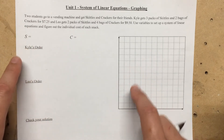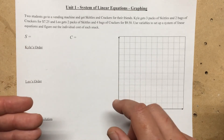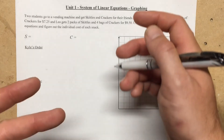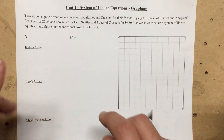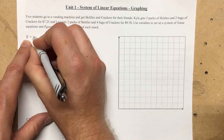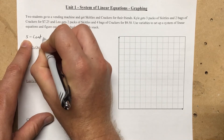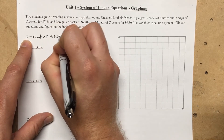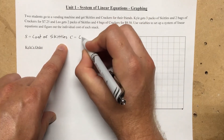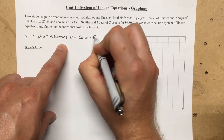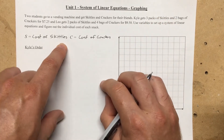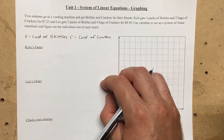The first thing we need to do is set up our variables. We are trying to solve for the cost of a bag of skittles and the cost of a bag of crackers, so those are going to be our two variables. We're going to use the letter s to represent the cost of skittles, and the variable c is going to be our cost of crackers. Those are the two variables we're going to use to set up these equations.